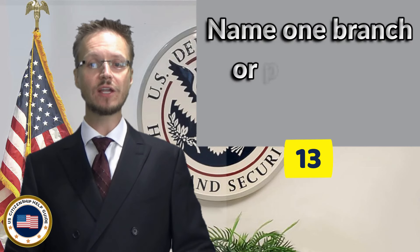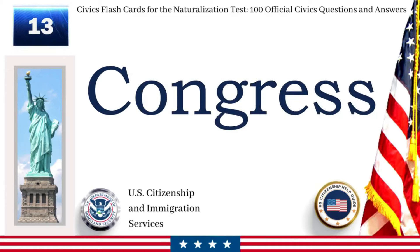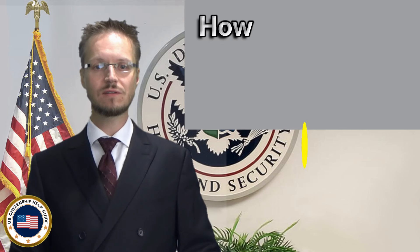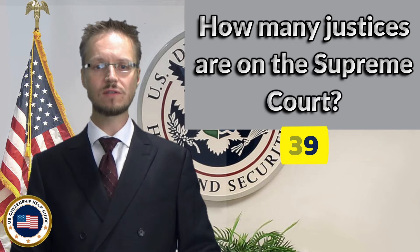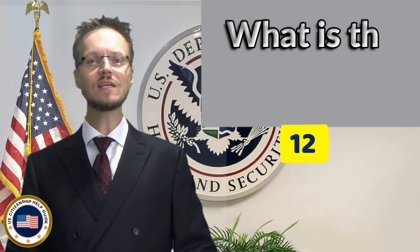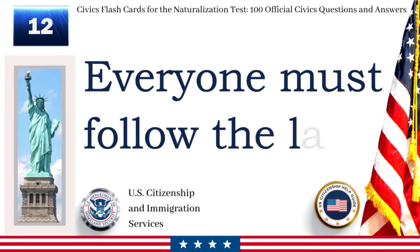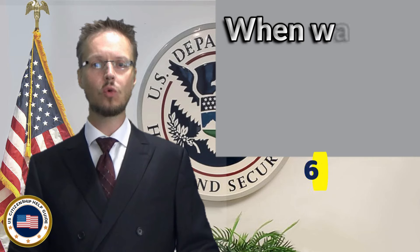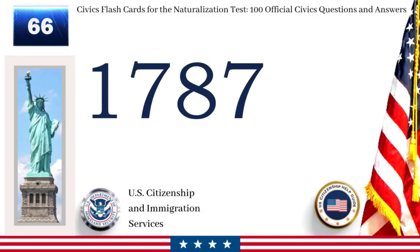Name one branch or part of the government. Congress. How many justices are on the Supreme Court? Nine. What is the rule of law? Everyone must follow the law. When was the Constitution written? 1787.